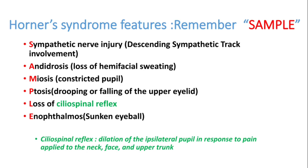We can remember the features of Horner's syndrome with the mnemonic SAMPLE: S — sympathetic nerve injury (descending sympathetic tract involved); A — anhydrosis (loss of hemifacial sweating); M — miosis (constricted pupil); P — ptosis (drooping of the upper eyelid); L — loss of ciliospinal reflex, meaning loss of dilatation of the ipsilateral pupil in response to pain applied to the neck, face, and upper trunk; E — enophthalmos (sunken eyeball).